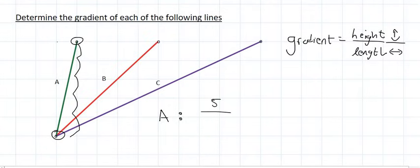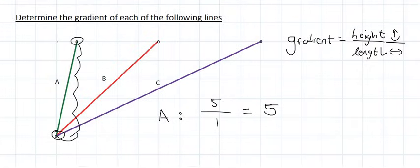And if we look at the length, if you look carefully, it's only going to move one place to the right, so the length is only going to be 1. Now 5 divided by 1 is 5, and so the gradient of A — the gradient of that line — is 5.